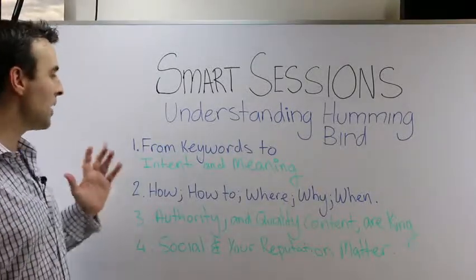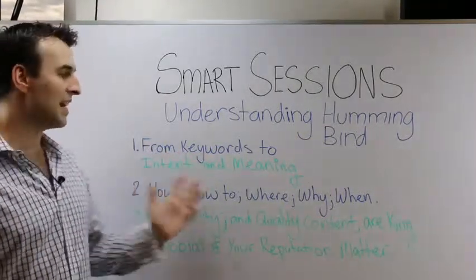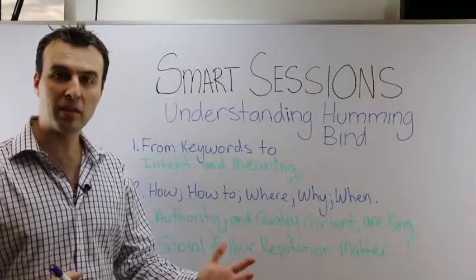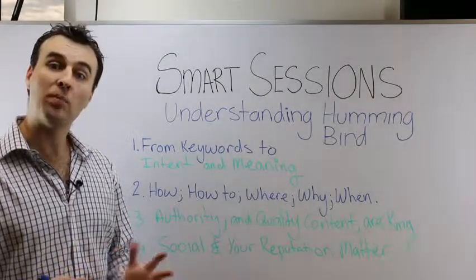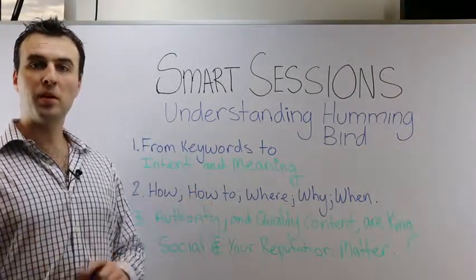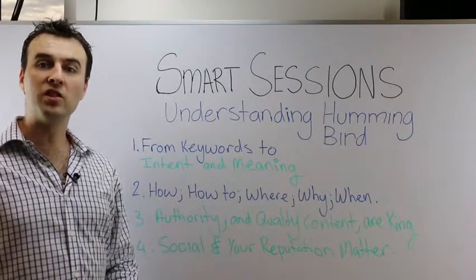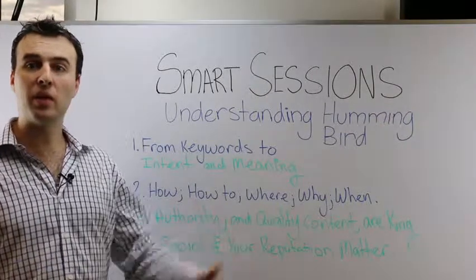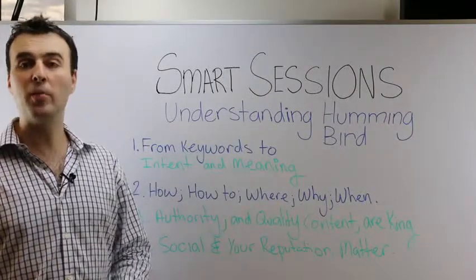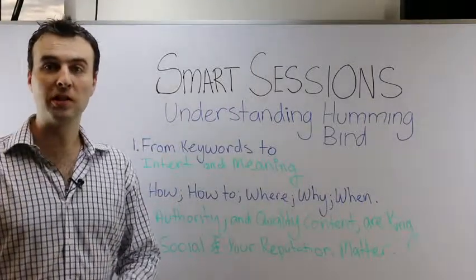The biggest thing with Hummingbird is moving from a keywords-based algorithm to an intent and meaning-based algorithm. Previously people may have typed something like 'cheap iPhones' into the search box. Google identified that over 70% of people now search for things like 'where to find the cheapest iPhones in California' or 'how can I find the very best Indian restaurant in Perth.'